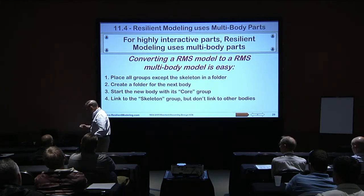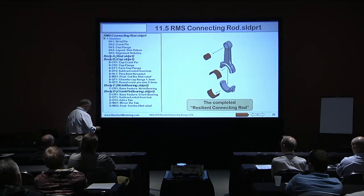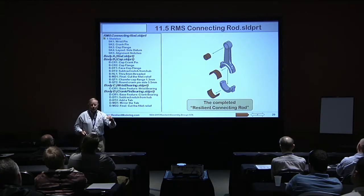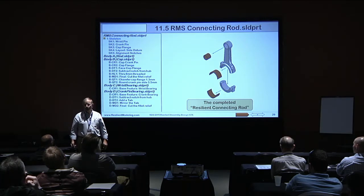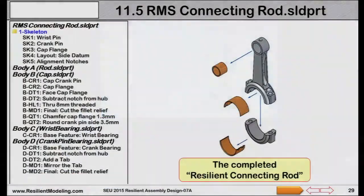The whole idea is that what's new here is really the skeleton group — that's where we're collecting our data. Instead of making folders for every small part, I use a two-character code: CR for core feature, DT for detail features, MO for modify features. If this thing grows enough, I'll put a folder in. But folders aren't required to make resilient modeling work.